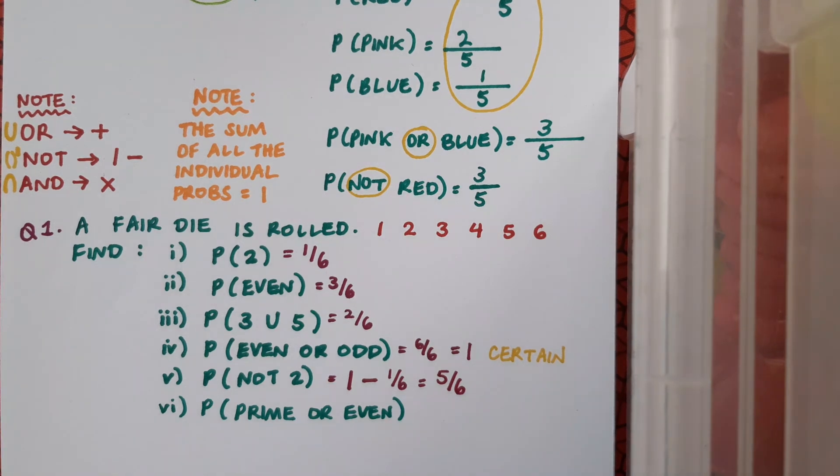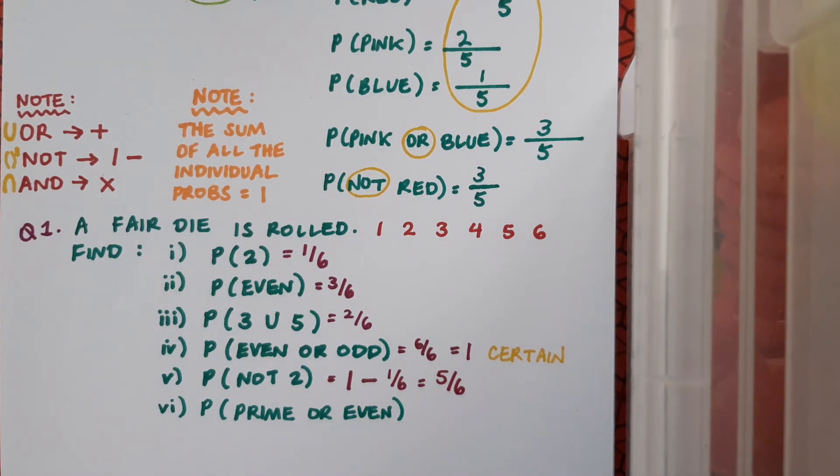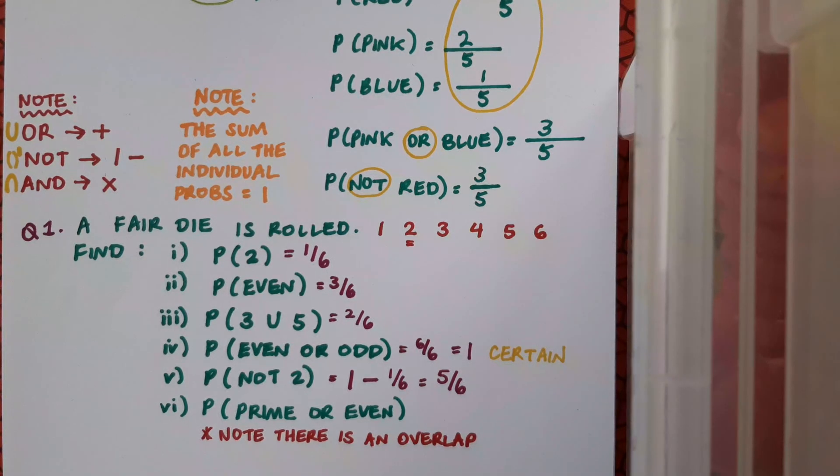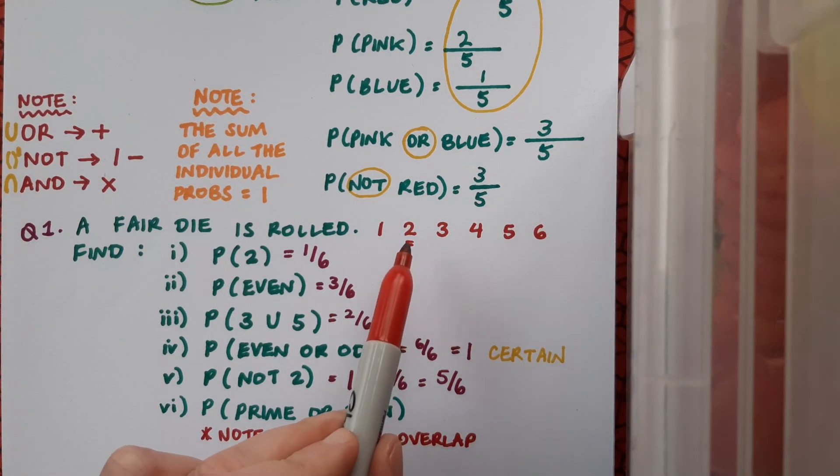In part six we're looking for the probability of rolling a prime or an even number. Note that there is an overlap between these two events because the number two is both prime and even.